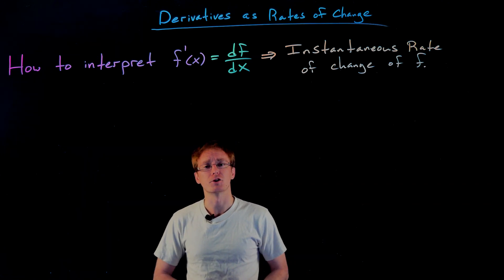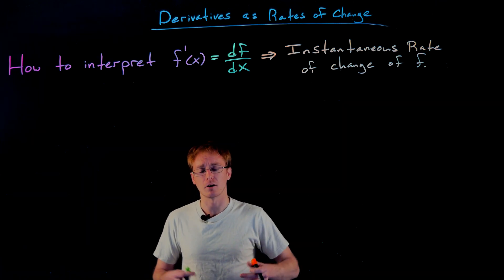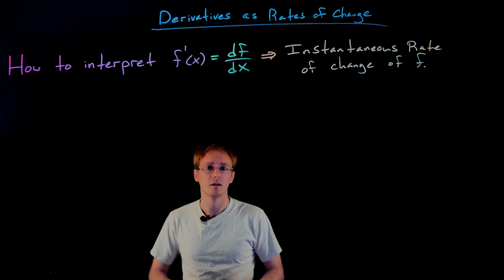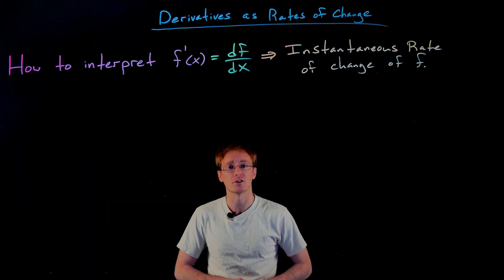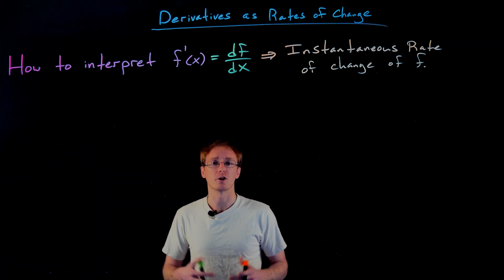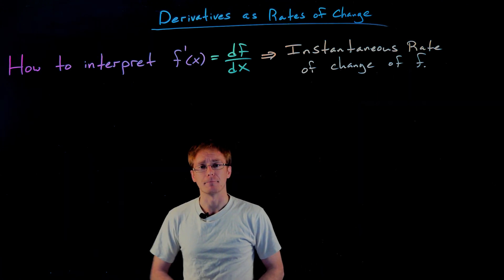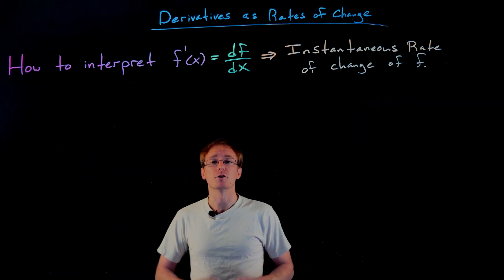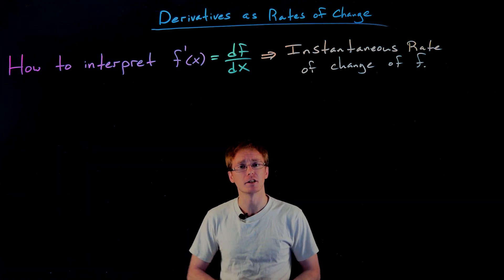We've already seen how to interpret this in some contexts, in particular in physics when tracking the motion of a moving object — how the derivative is related to the velocity or speed of a falling object. By the end of this video we want to be able to interpret the derivative no matter what our function f is describing, since the derivative is always telling us that instantaneous rate of change.